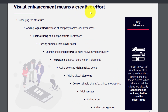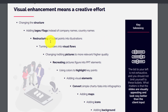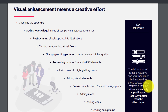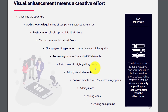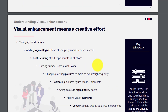Visual enhancement is a creative form, and the list of possible improvements is not exhaustive — you should not limit yourself. What matters is that the slides are visually appealing and look way better than the client input. Some things you can do: change the structure, add logos and flags instead of company names and country names, restructure bullet points into illustrations, turn numbers into visual flows, change pictures to more relevant or higher quality ones, and use colors to highlight key points.